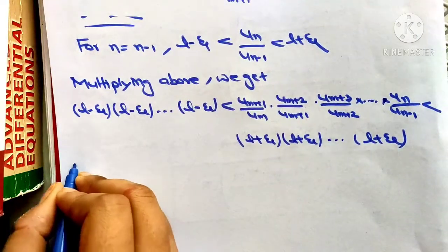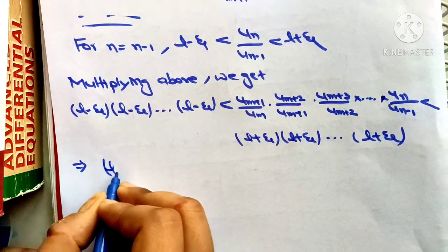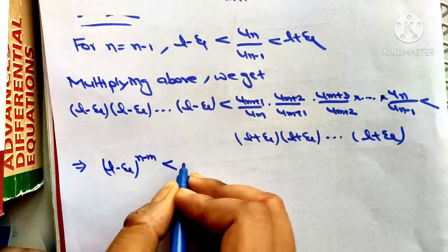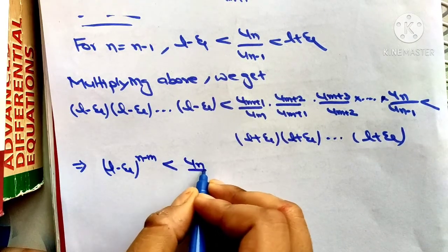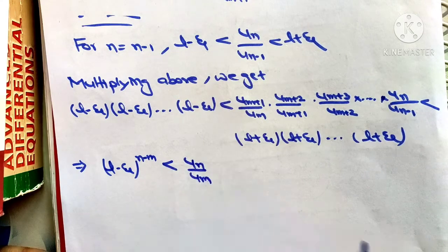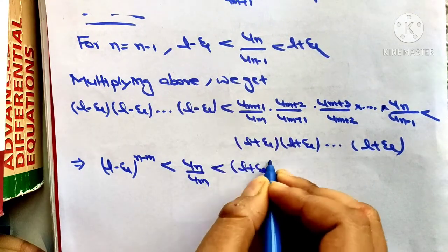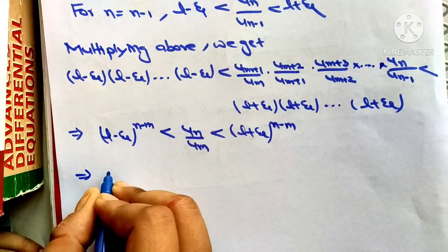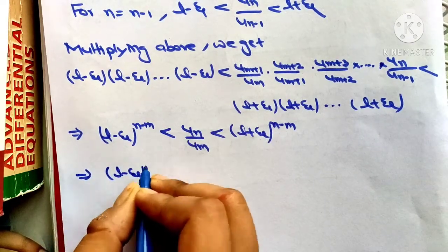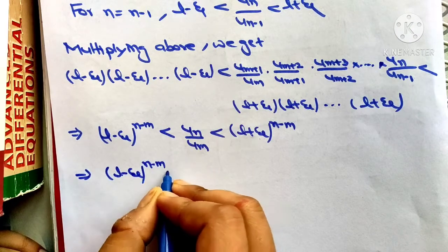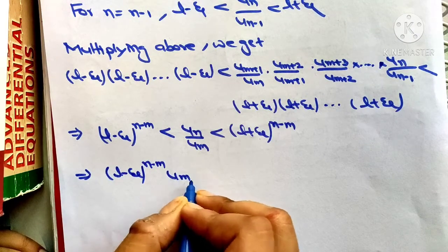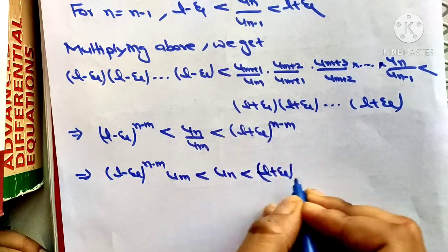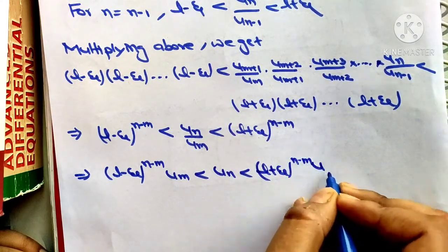So we can write this as: (l minus epsilon)^{n-m} less than a_n / a_m less than (l plus epsilon)^{n-m}. This implies: (l minus epsilon)^{n-m} · a_m less than a_n less than (l plus epsilon)^{n-m} · a_m.